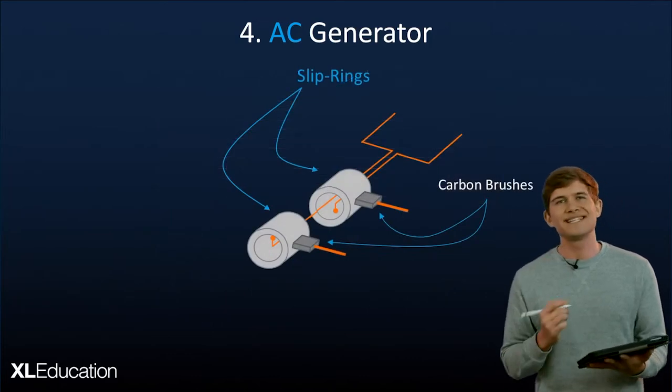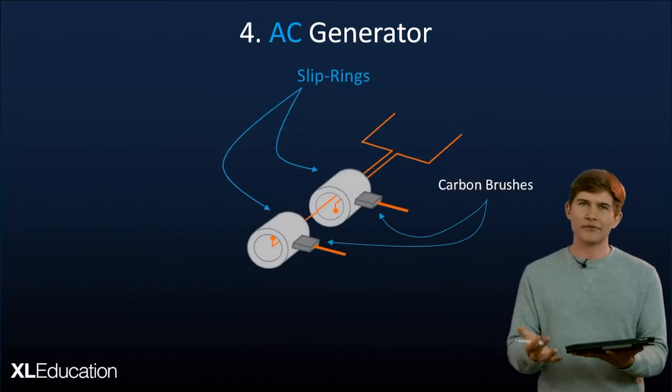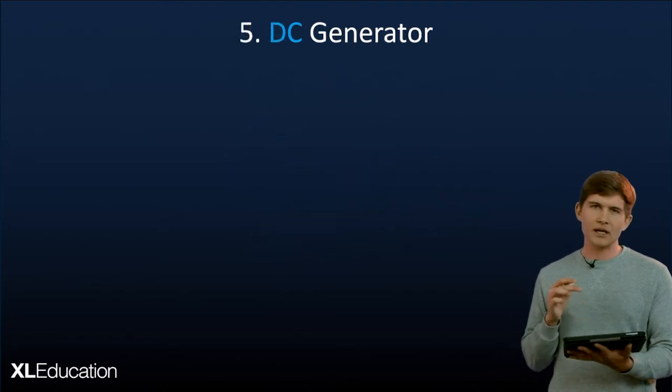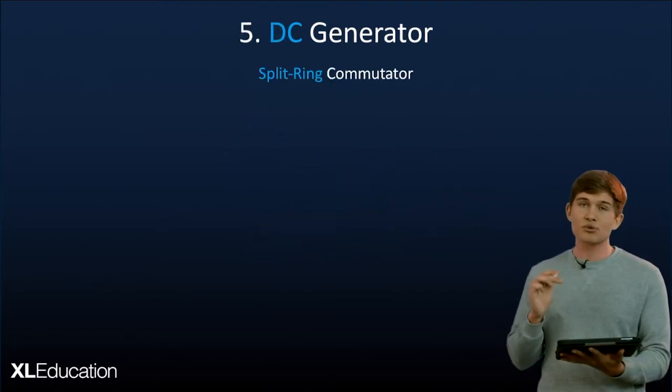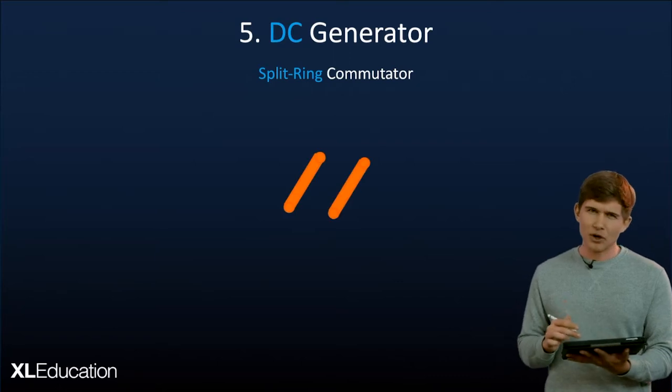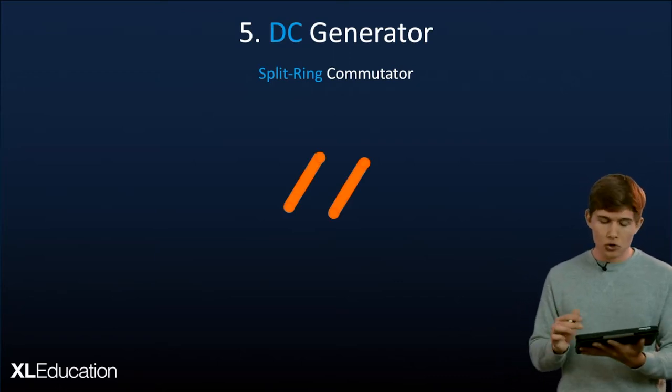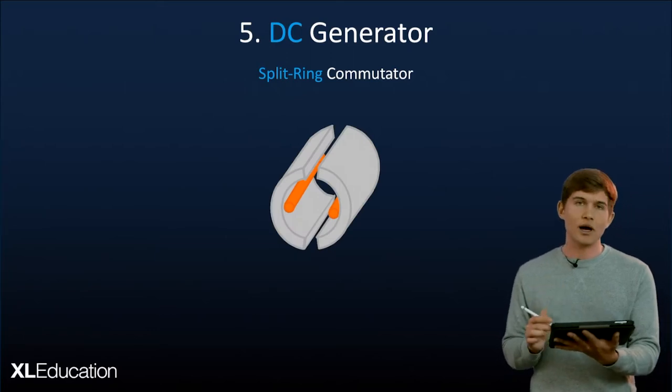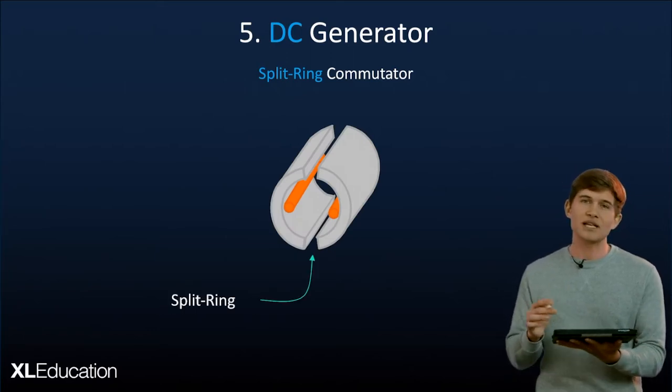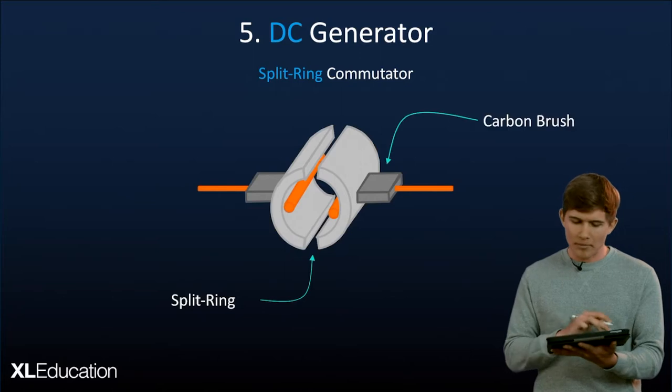But you remember that we have DC power as well. So how do we get that out from a generator? Well, they have a very interesting device that you've already seen in your motors and that is that the split ring commutator. And the split ring commutator does the same thing that it did in generators where we have our two conductors coming out from our coil. They connect to our split rings and the split rings get the power out using those carbon brushes you should remember.